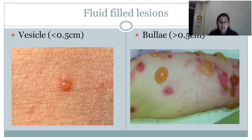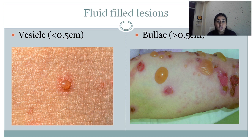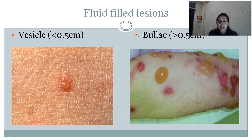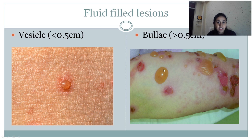Coming to fluid-filled lesions — they are divided into two parts. First is vesicle and second is bulla. Vesicles are less than 0.5 cm — these are small fluid-containing lesions of less than 0.5 cm. Fluid-filled lesions of more than 0.5 cm are called bullae. So the two types of fluid-filled lesions are vesicles (less than 0.5 cm) and bullae (more than 0.5 cm).